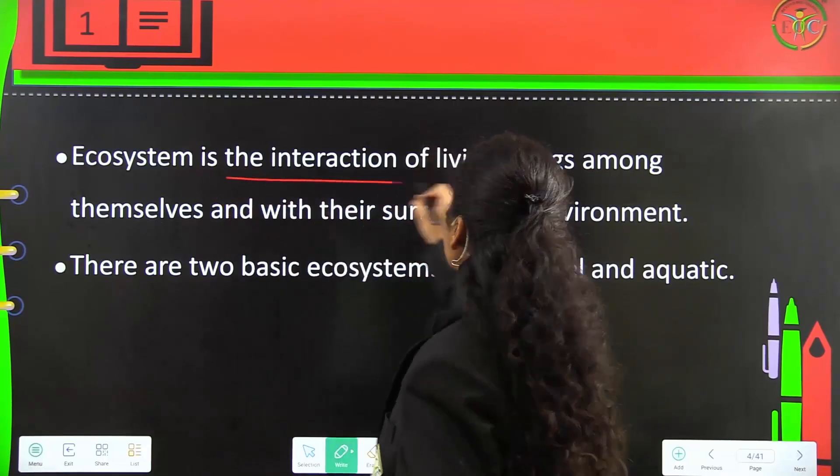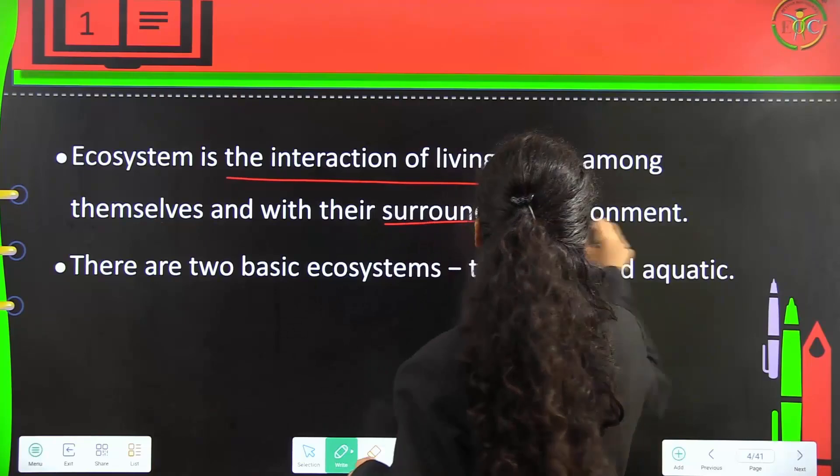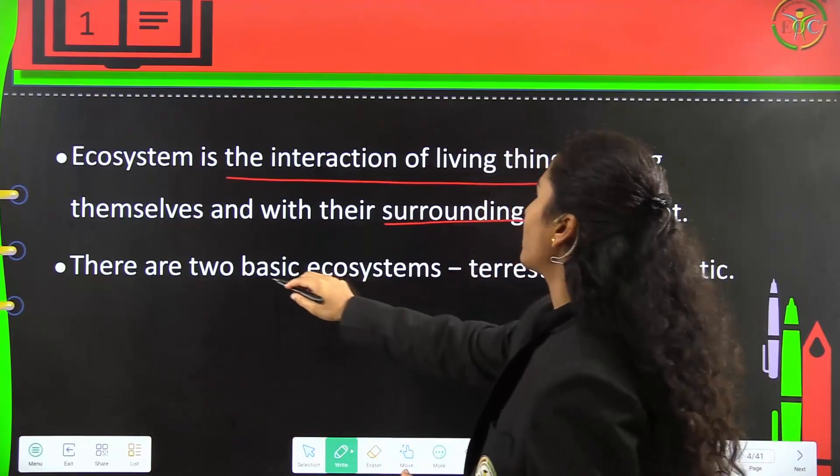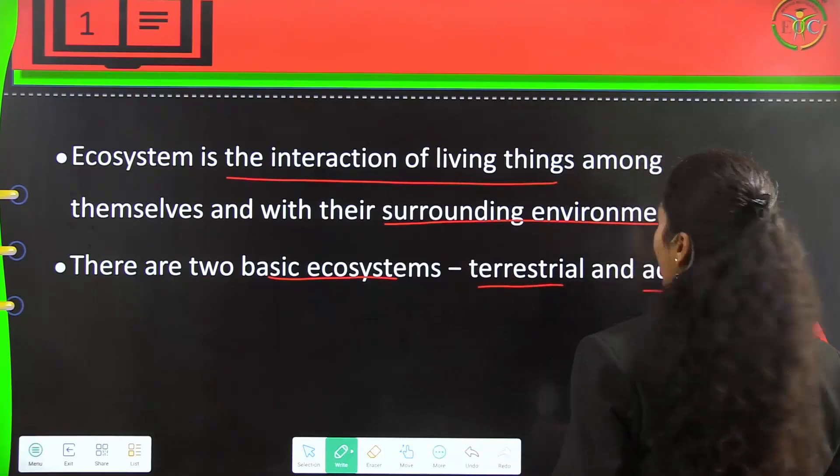Basically, ecosystem is the interaction of living things among themselves and with their surrounding environment. There are two types of ecosystems: terrestrial and aquatic.